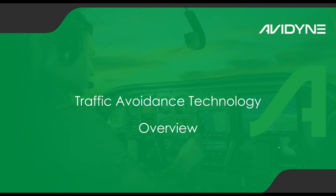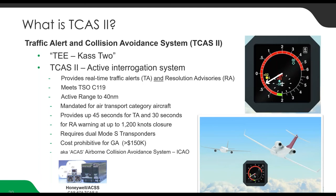Let's talk about traffic avoidance technology. Back in the mid-80s, TCAS-2 was developed and mandated for air transport category aircraft. TCAS-2 — Traffic Alert and Collision Avoidance System — is an active interrogation system, meaning the host aircraft's processor sends out interrogation pulses as though it were a ground-based radar. It waits for the transponders of nearby aircraft to hear those pulses and reply back. If it's mode C, they send altitude and squawk code; if mode A, just the squawk; if mode S, you get extended squitter.